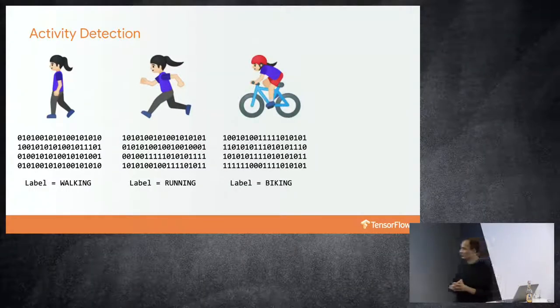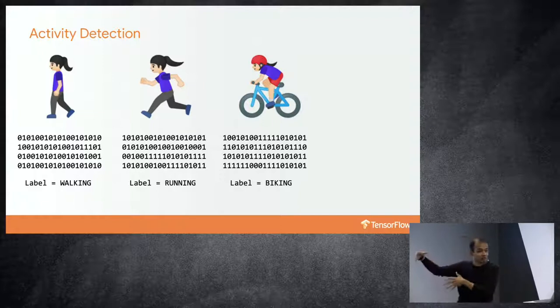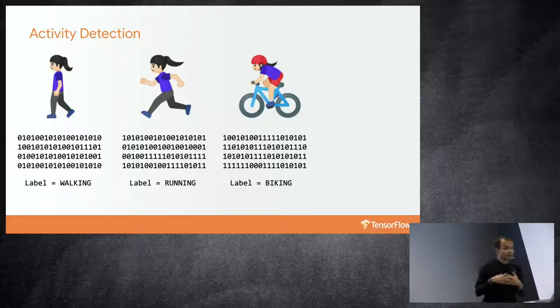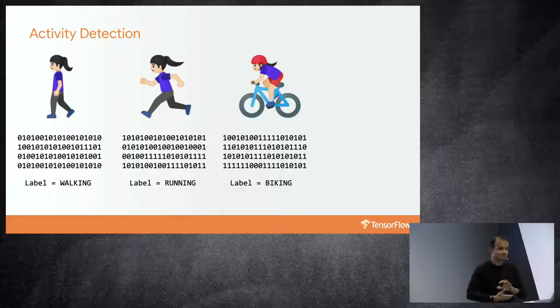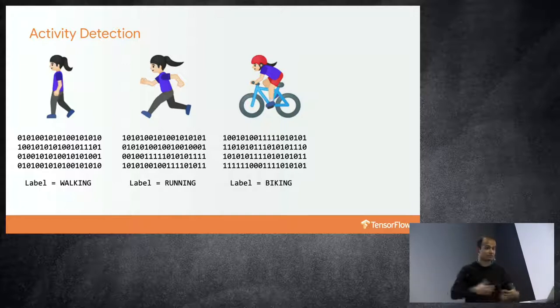What we are effectively doing with a neural network is mapping all these inputs into some sort of another representation — this is typically called a feature. For example, if we take a car: brand, color, number of wheels, type of engine, liters, diesel or petrol — all of these components are going to be different features to describe a car. Similarly, how fast is a person walking, what is their stride length — these are all different features we can use to categorize activity.